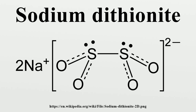2 Na₂S₂O₄ plus H₂O gives Na₂S₂O₃ plus 2 NaHSO₃. In the presence of oxygen, it decomposes to sodium bisulfate and sodium bisulfite: Na₂S₂O₄ plus O₂ plus H₂O gives Na₂SO₄ plus NaHSO₃. Sodium bisulfate and sodium bisulfite decrease the pH and therefore accelerate the reaction. Sulfur dioxide is formed under strongly acidic conditions.